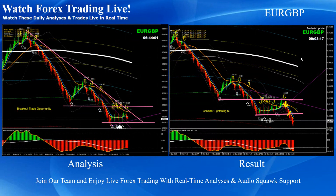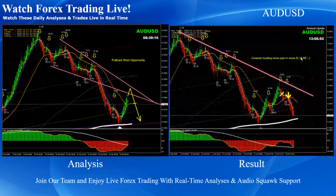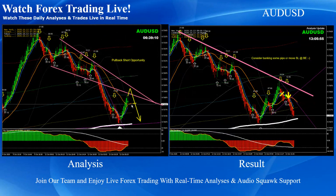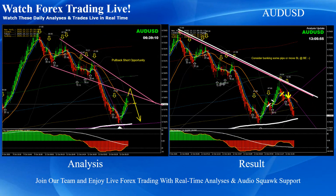Euro pound — pretty straightforward. You can see this was another small short trade breakout on Euro pound. Aussie dollar — we banked some profit and then looked for another pullback. The safer trade — you can see we had another small pullback which we came out of.